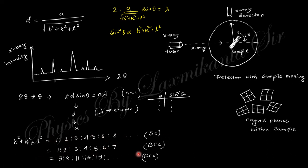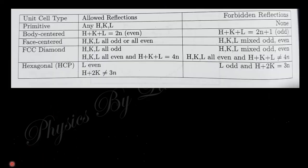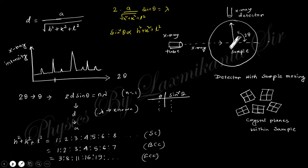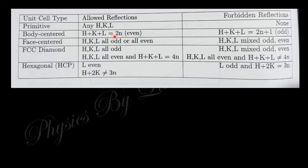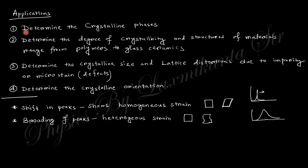If this ratio is present, then this is simple cubic; this ratio means body-centered cubic; this ratio means face-centered cubic. From XRD information, you can easily find out which peaks represent which planes and how many planes are present in the crystal. If there is a single crystal, only one peak is present in the graph; multiple peaks indicate a polycrystalline material. In tabulated form: for a primitive cell all HKL are allowed; for body-centered cubic, H+K+L = 2N; for face-centered cubic, all even or all odd. This gives allowed and forbidden reflections.